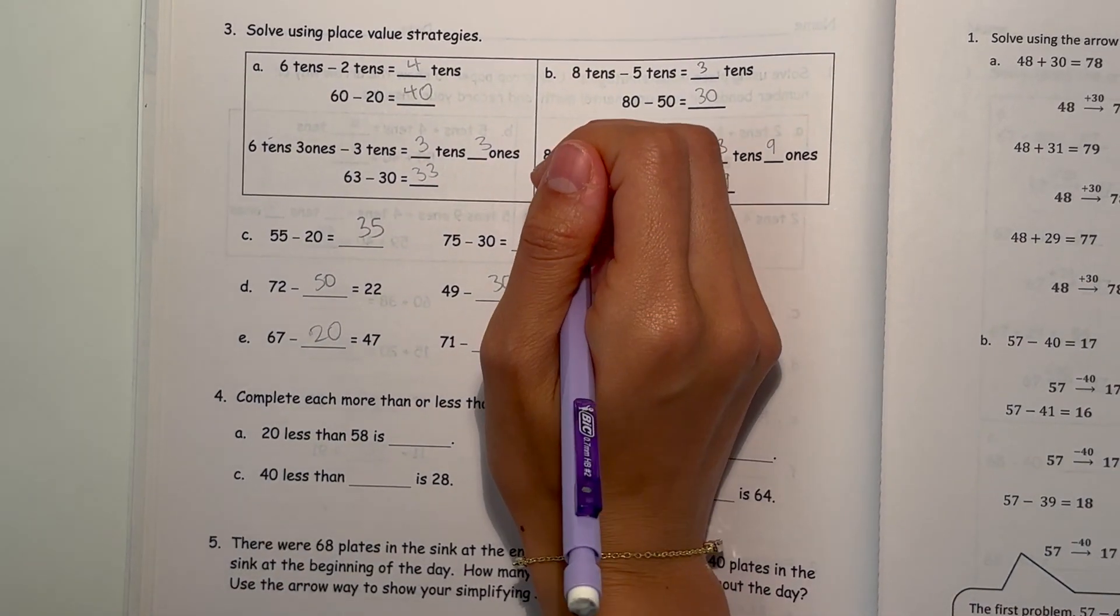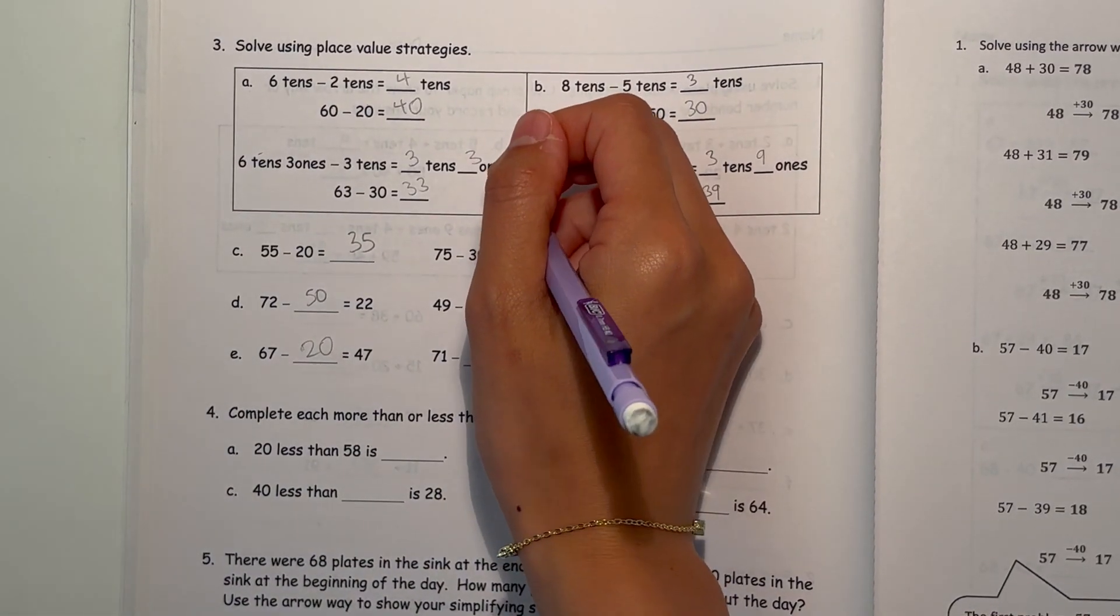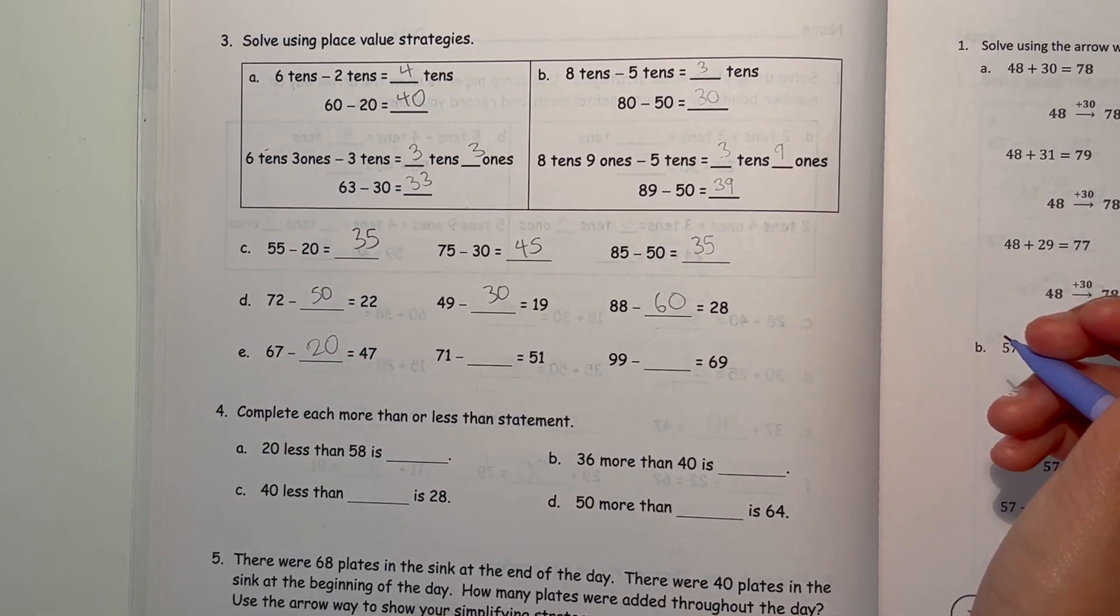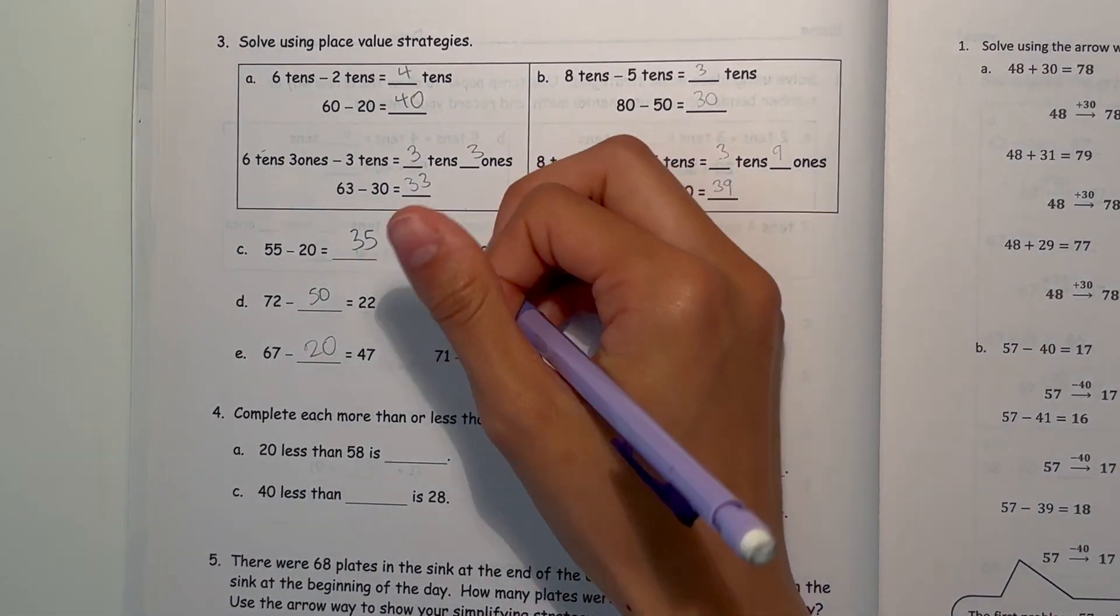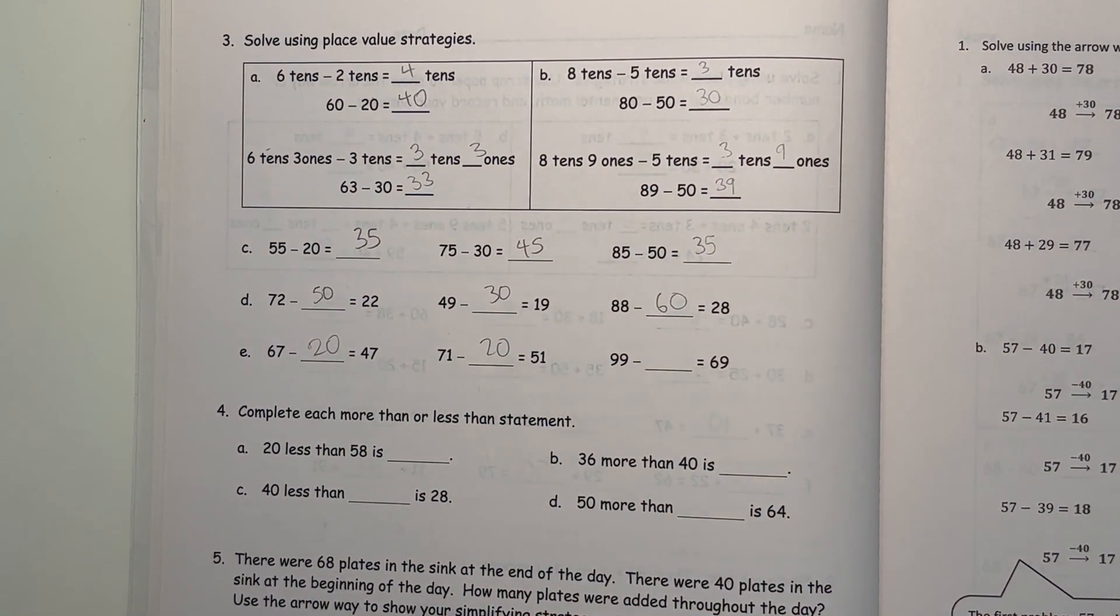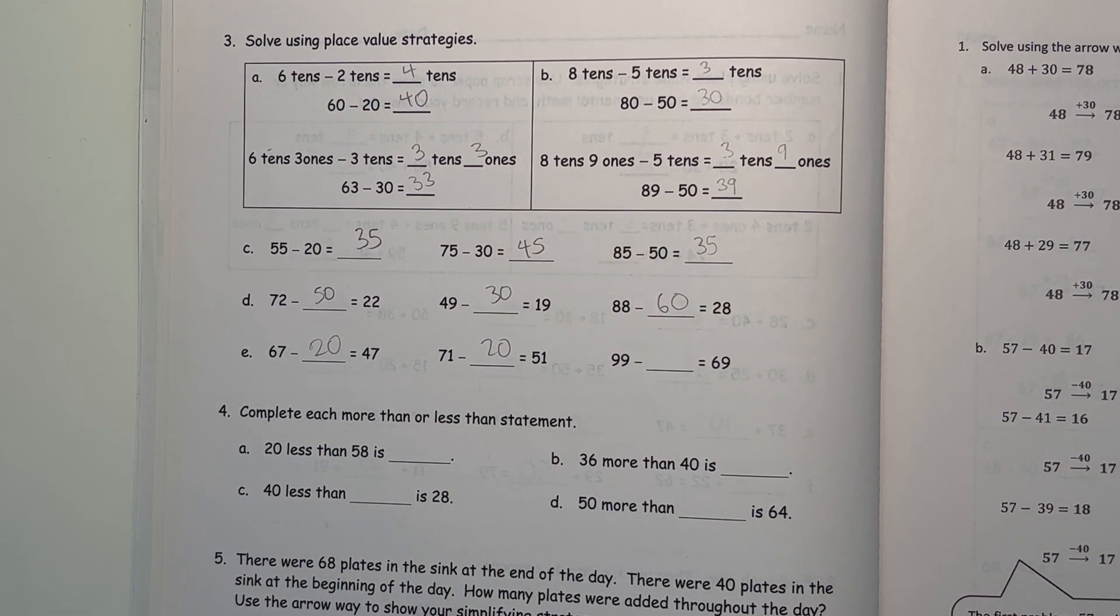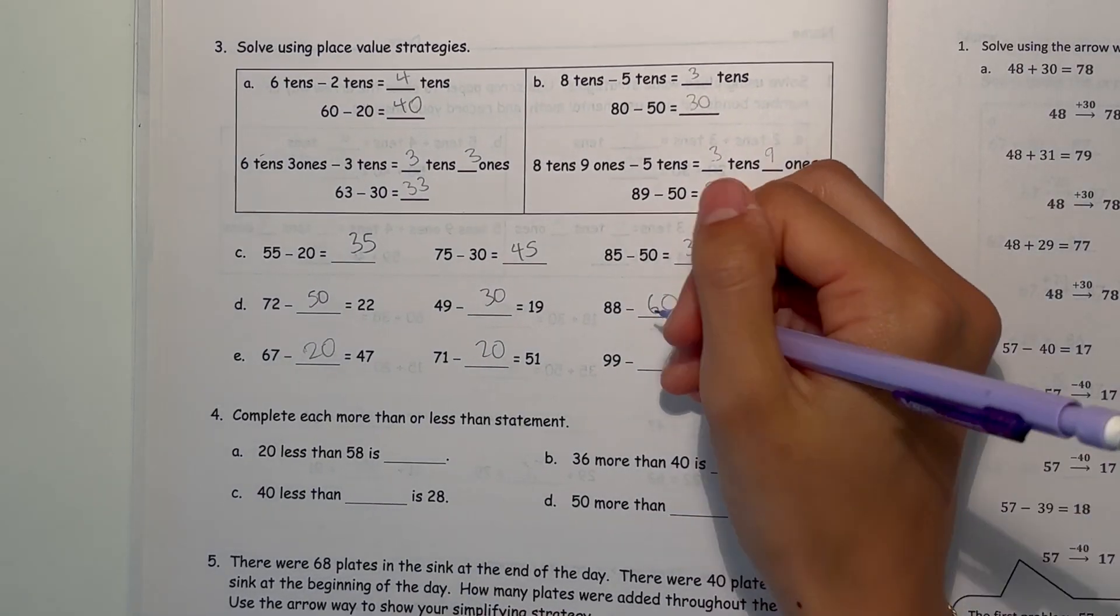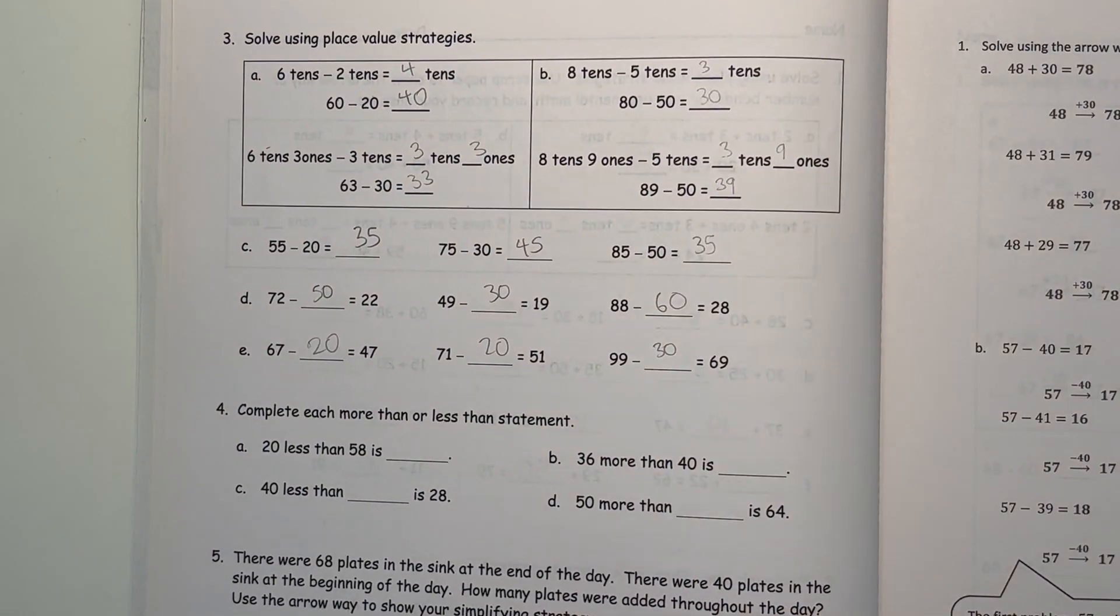Now 67 minus 47 is 20. 71 minus 51 is 20. And 99 minus 69, that's 30.